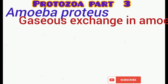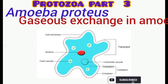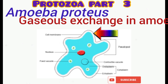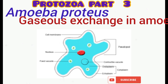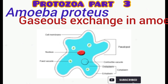Let's talk about respiration or gaseous exchange in Amoeba. Gaseous exchange occurs through the plasma membrane. Carbon dioxide diffuses out while dissolved oxygen diffuses into the cell.